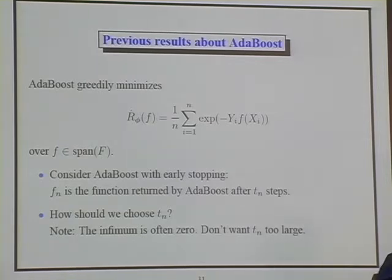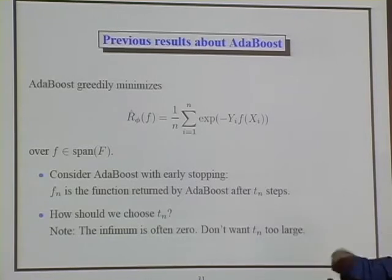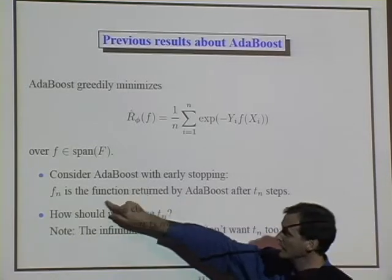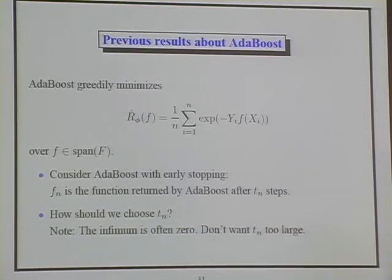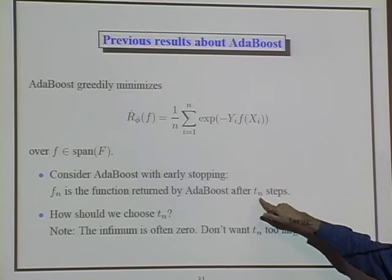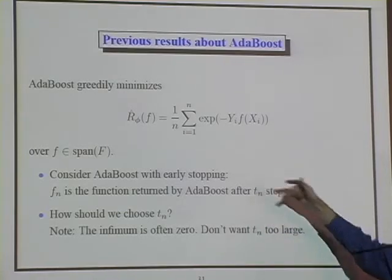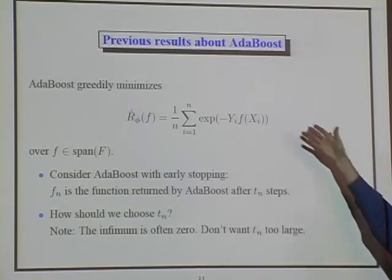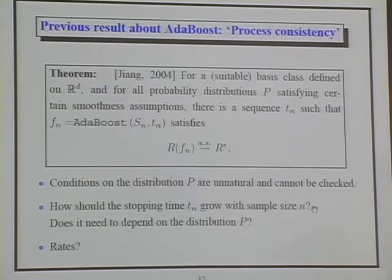But how is Adaboost used in practice? It's with early stopping: you take a bunch of steps and stop at some point. You're not imposing regularization, not keeping individual steps small — you're just taking the steps Adaboost wants to take, adding functions until you get a suitable combination. Maybe through cross-validation or a fixed schedule. So let's suppose we have a fixed schedule. How should we choose that schedule? Obviously we can't let it get arbitrarily large, because as I pointed out, this criterion can go to zero.